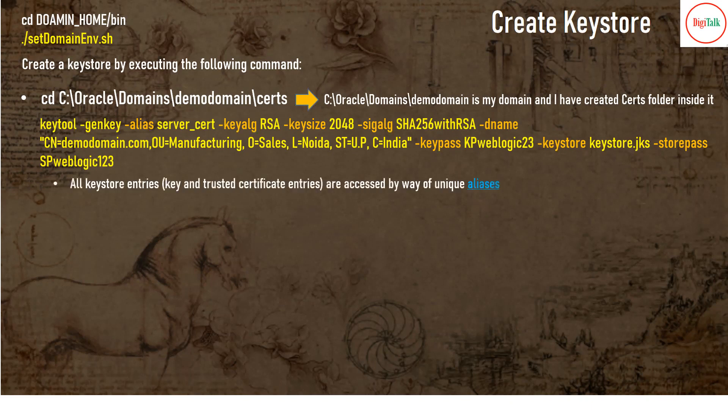All keystore entries are accessed via unique aliases. There are two color codes: amber for standard command syntax and yellow for variables you change according to your environment. The keytool utility comes with Java. When running the command, the options include: alias (used later to access certificates from the keystore), key algorithm (the algorithm used to generate the key pair containing your private and public key), and key size (specified with the keysize parameter).